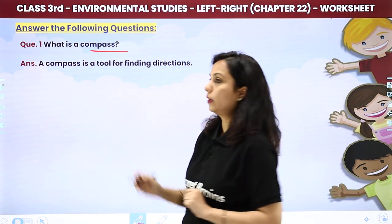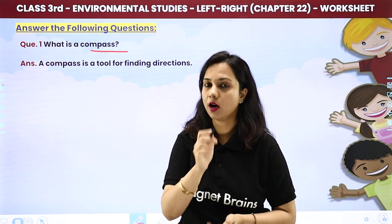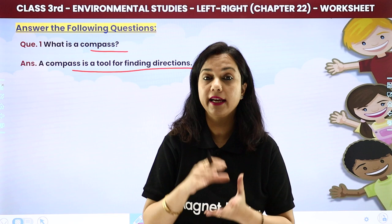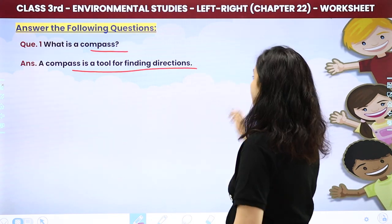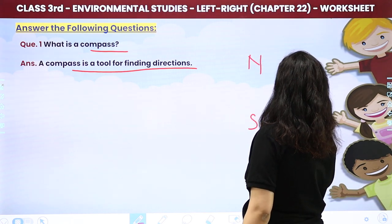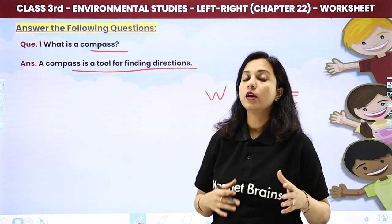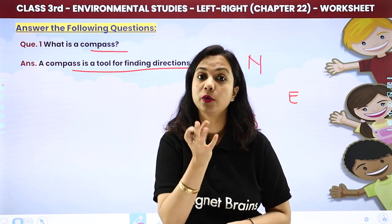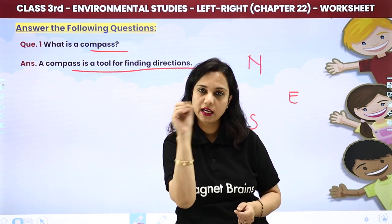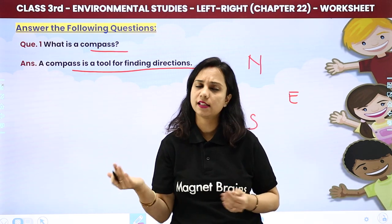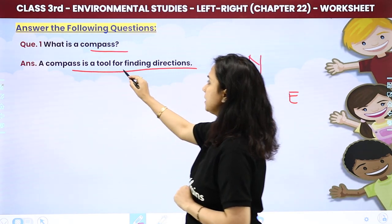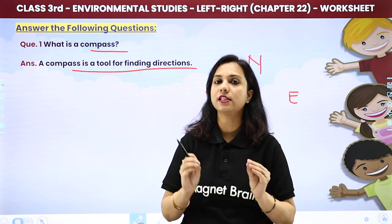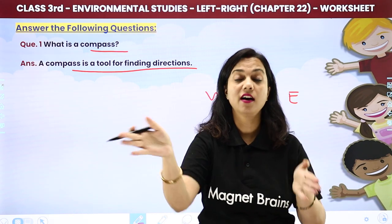Now, what is a compass? A compass is a tool for finding directions. It helps us know which direction is where — north, south, east, or west. Wherever the needle of the compass points, you will understand which direction is north, south, east, or west. Always remember: a compass is a tool for finding directions.